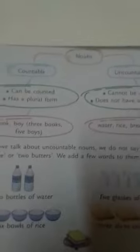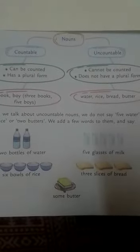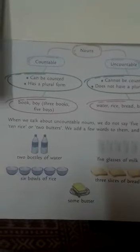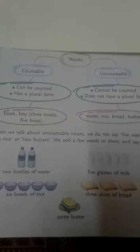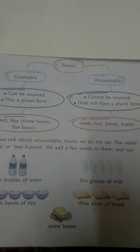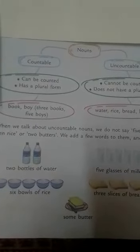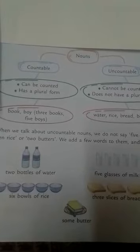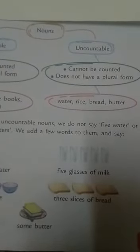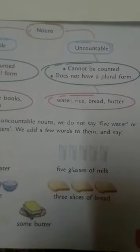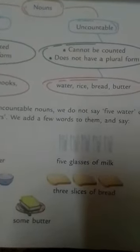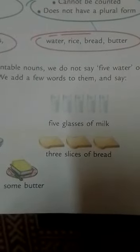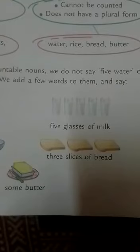Now, coming to the other thing. When we talk about uncountable nouns, we do not say 5 waters, 10 rice, or 2 butters. We add a few words to them and say: 2 bottles of water, 6 bowls of rice, 5 glasses of milk, 3 slices of bread, some butter.